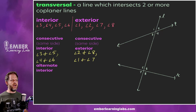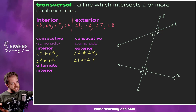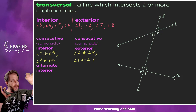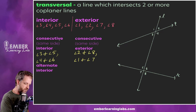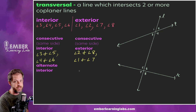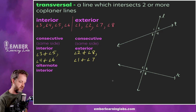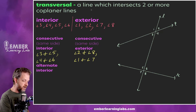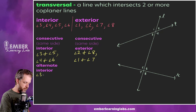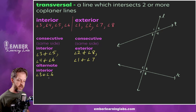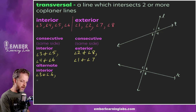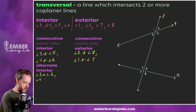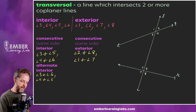Alternate interior angles are on opposite sides of the transversal — they alternate. We're still talking about interior angles, but on alternate sides. So angle 3 and angle 6 would be alternate interior — crisscross — and then angle 4 and angle 5 would be the other pair of alternate interior angles.